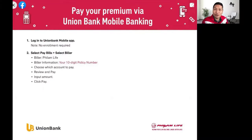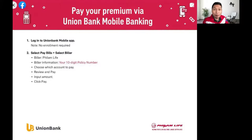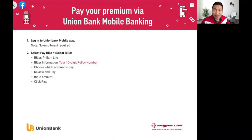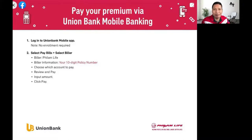If you have the UnionBank mobile banking app, there's no need to enroll. You go straight to the pay bills section of the app, select the biller Philam Life or AIA Philam Life, input your 10-digit policy number, choose which account will fund the payment, and click Pay. Now you've paid your Philam Life plan using the UnionBank mobile banking app.